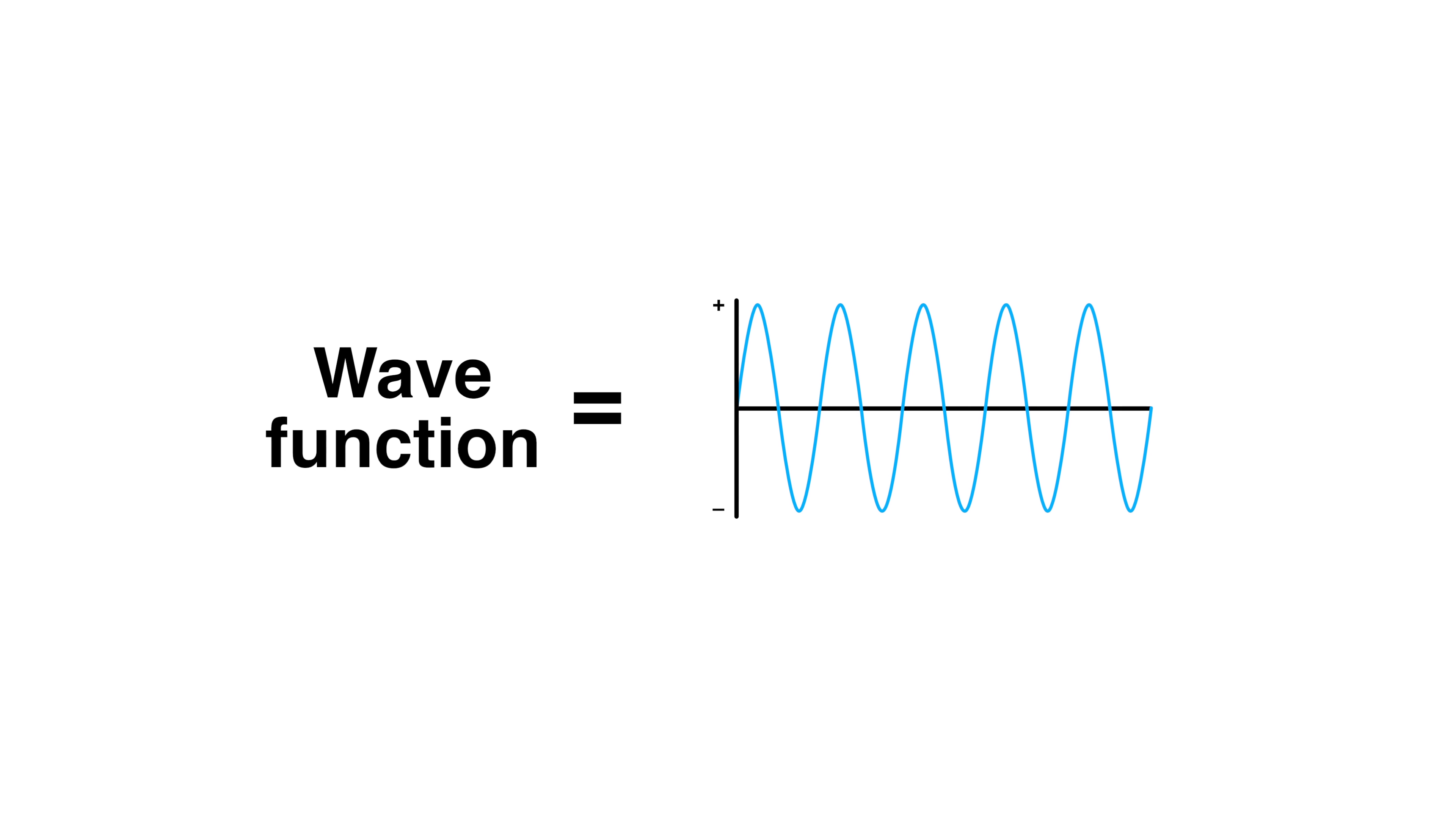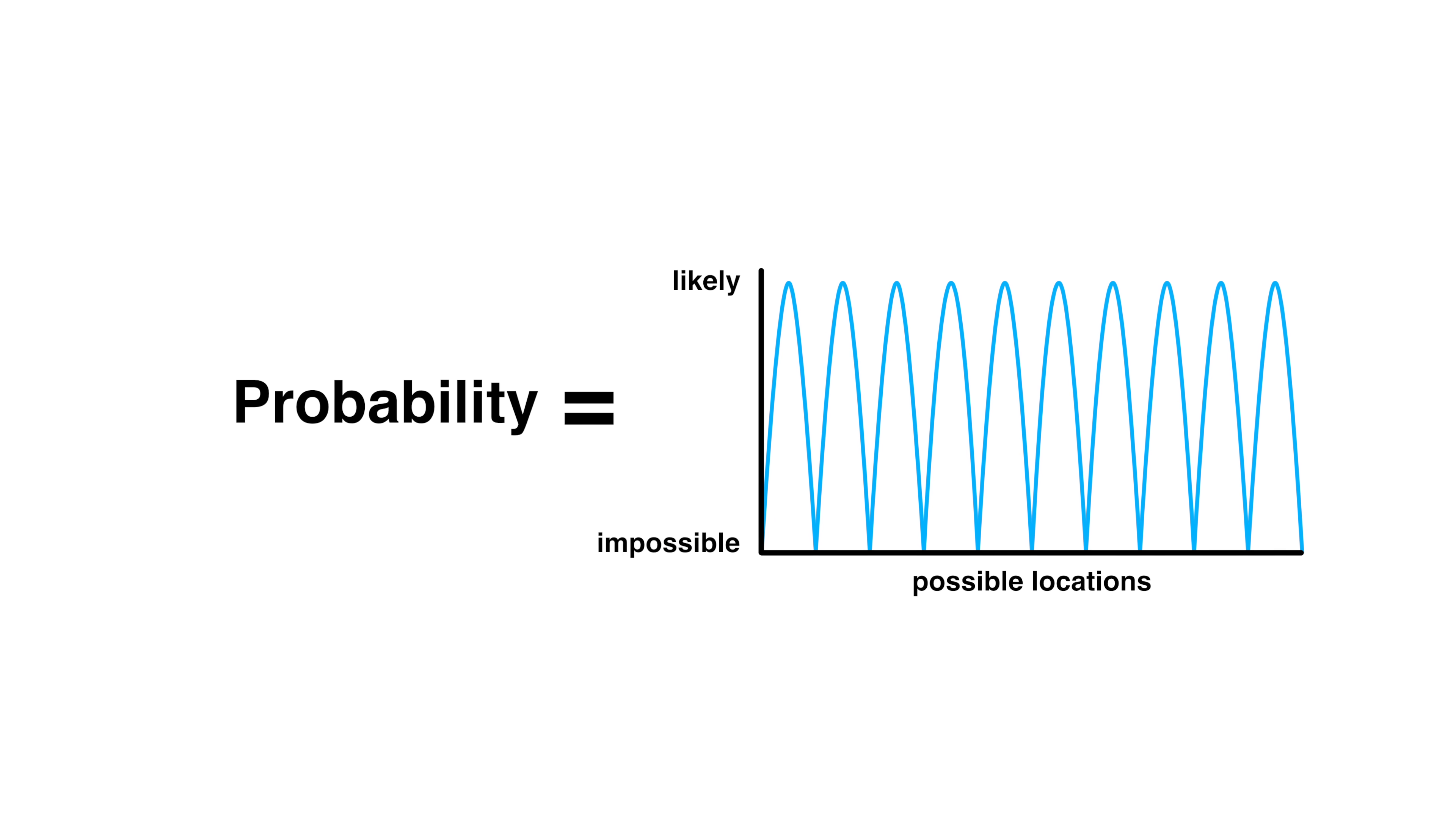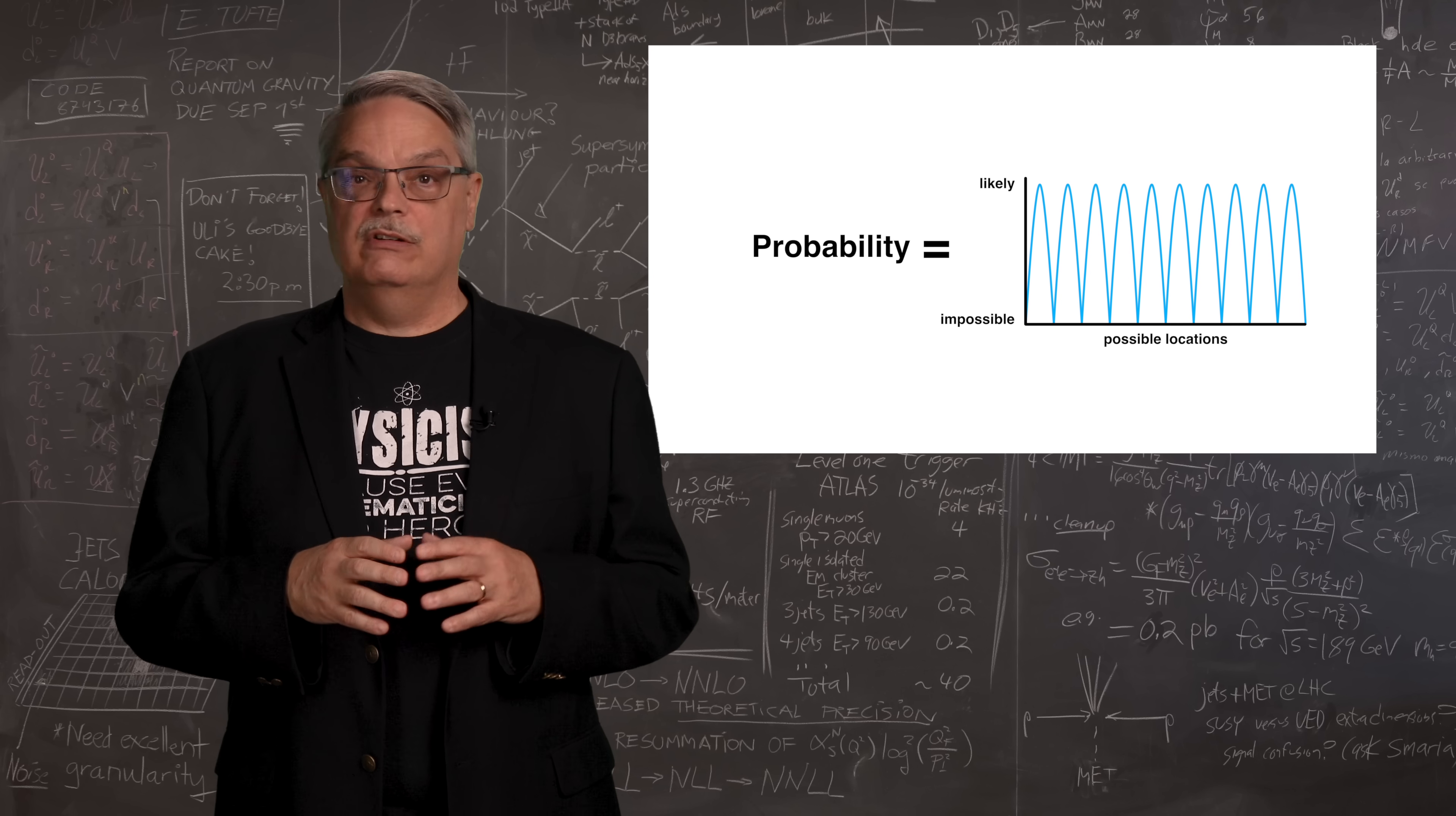If we take the wave function and square it, which means to multiply it by itself, the squared wave function tells you where a particle can be found. Where the wave function is large, there is a large probability of finding the particle there. And where it's zero, the probability of finding the particle there is zero.